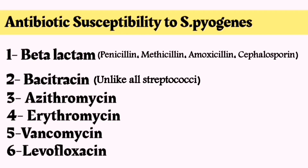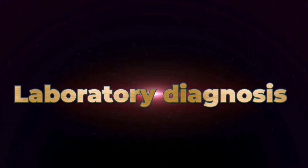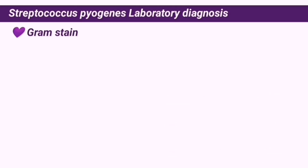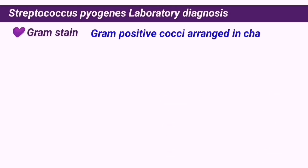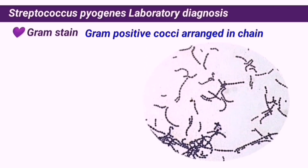Next we will discuss how to take samples and diagnose S. pyogenes infection in the lab. The first step in diagnosing any species of bacteria is the gram stain. You should not take any steps like isolation on agar or perform any biochemical tests until finding out whether an organism is gram-positive or gram-negative. S. pyogenes is a gram-positive coccus arranged in long or short chains or in pairs, with the exact arrangement dependent on the environmental conditions affecting its growth.